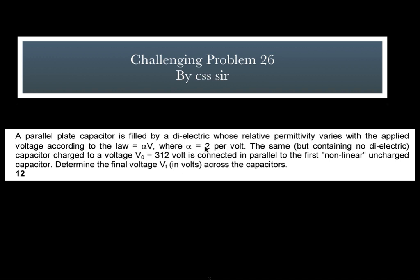Next problem is from capacitor. A parallel plate capacitor is filled by a dielectric whose relative permittivity varies with the applied voltage according to the law alpha V, where alpha is equal to 2 per volt. The same but containing no dielectric capacitor charged to a voltage V0 equal to 312 volt is connected in parallel to the first non-linear uncharged capacitor. Determine the final voltage across the capacitor. This classical problem is from Irodov. I have selected this problem because in JEE Advanced nowadays, this type of crispy problems is a trend. You have to just apply single equation and you will be landing somewhere, maybe a quadratic equation or linear equation and you can easily solve and get the answer.